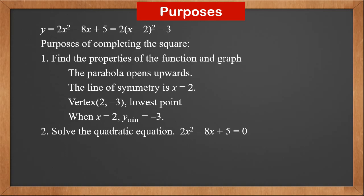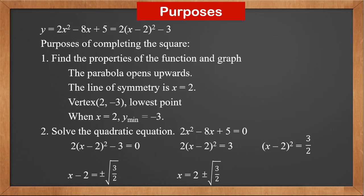The second purpose is to solve the quadratic equation. If 2x² - 8x + 5 = 0, then after completing the square, 2(x - 2)² - 3 = 0. From this, we get (x - 2)² = 3/2, so x - 2 = ±√(3/2). Therefore there are 2 roots: x = 2 ± √(3/2).